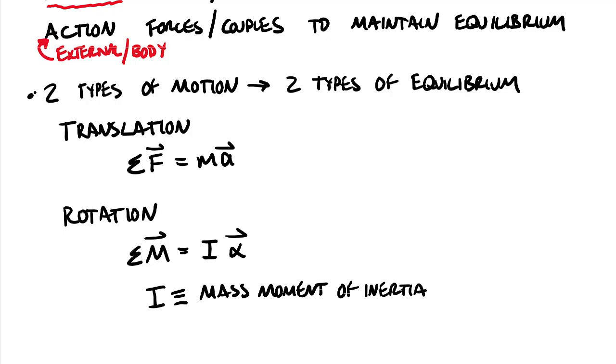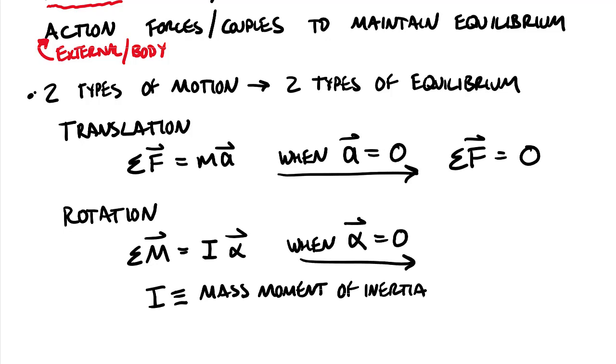Okay so let me add a couple more statements here. Sum of force equals mass times acceleration, but when a, our linear acceleration is equal to zero, we can simplify this equation to sum of all forces is equal to zero. Same equation we use in chapter three for particle equilibrium. And then here when we have angular acceleration equal to zero, so when alpha as a vector is equal to zero, and keep in mind this is angular acceleration, then we end up with an equation sum of all moments equal to zero.